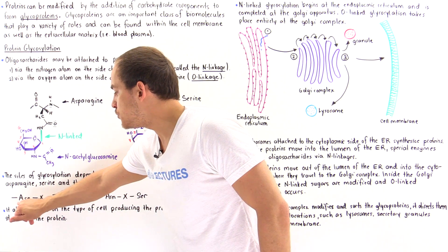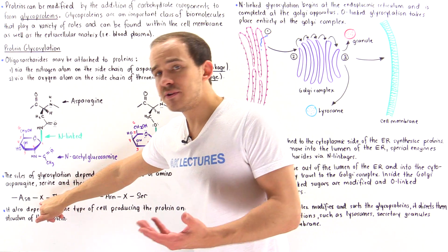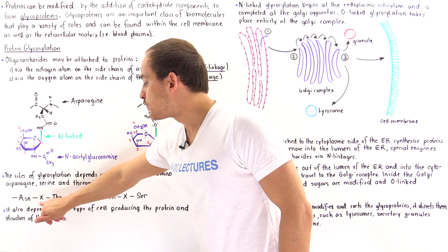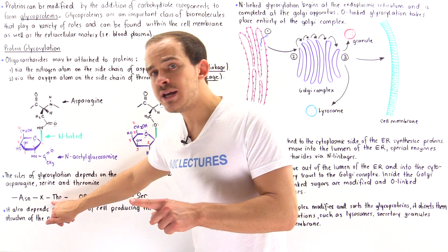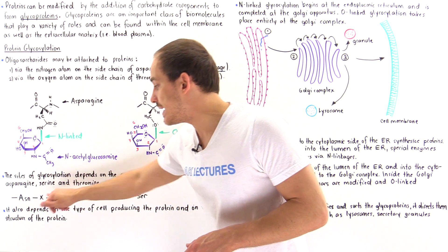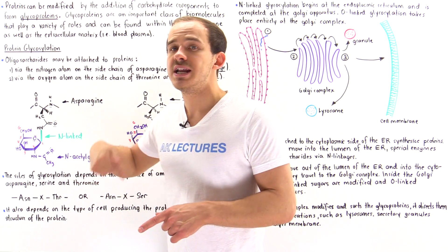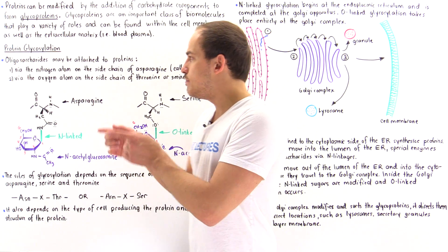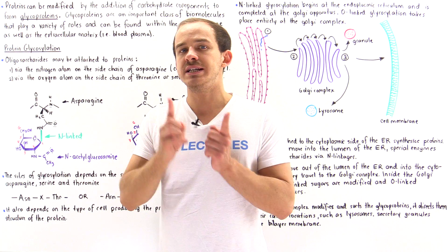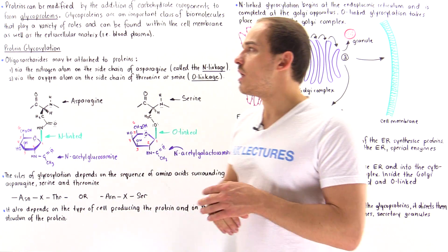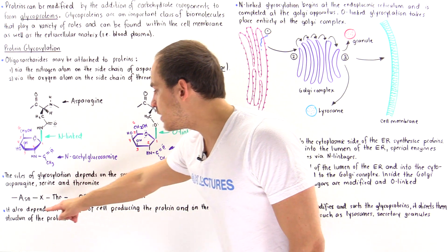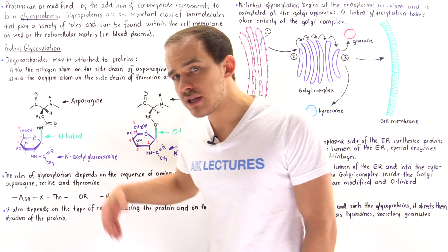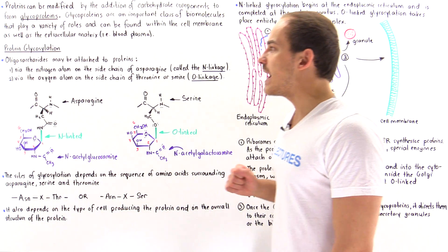Right next to the asparagine (ASN), there must be an arbitrary amino acid X, where X cannot be proline, followed by either threonine or serine. Only if the sequence matches these two patterns will the asparagine actually be modified. Additionally, what also determines the sites of modification is the actual 3D structure of that protein and the type of cell that is carrying out the protein glycosylation process.